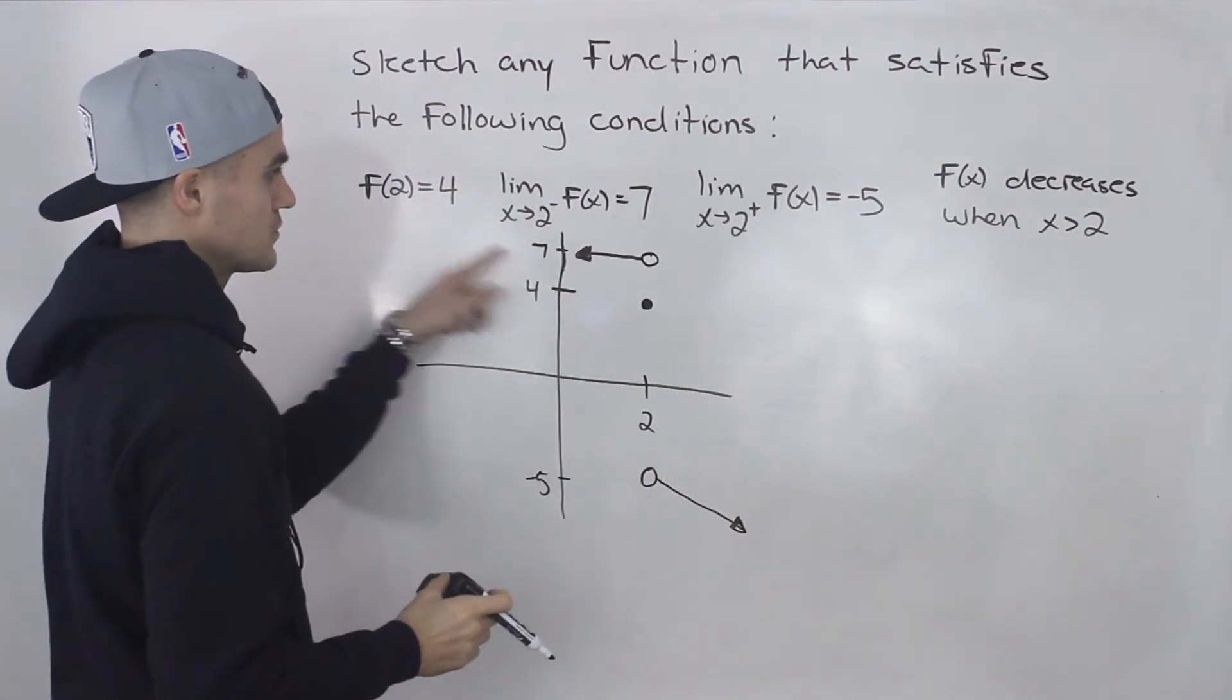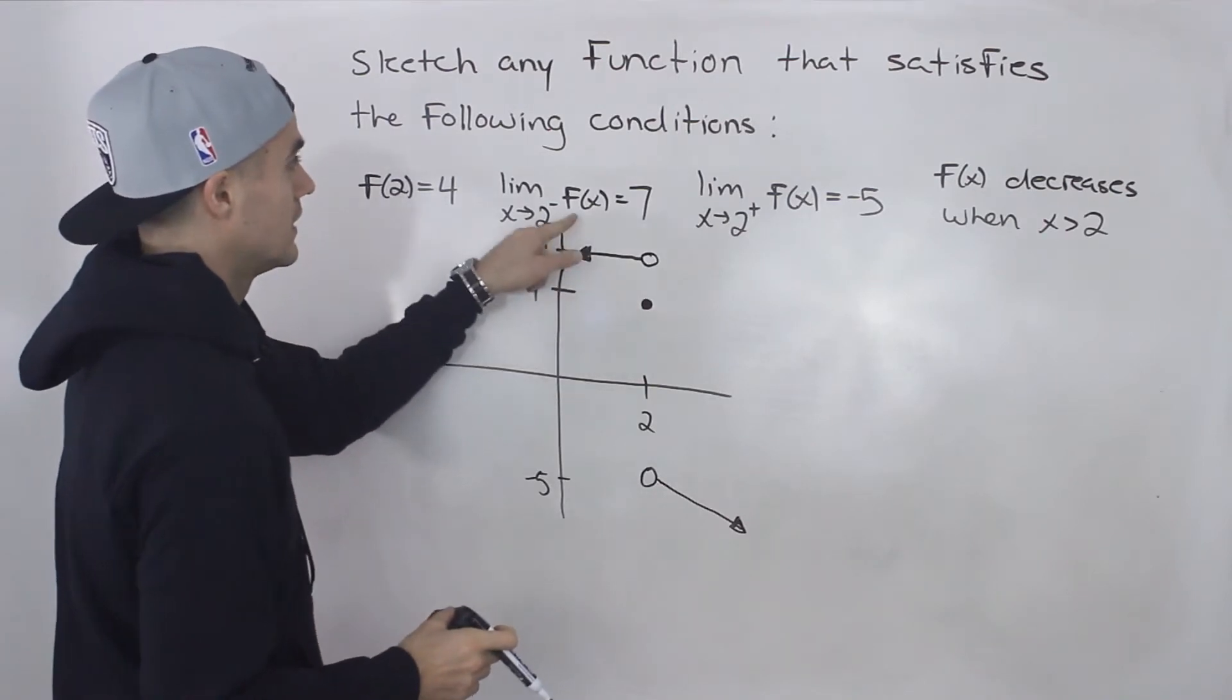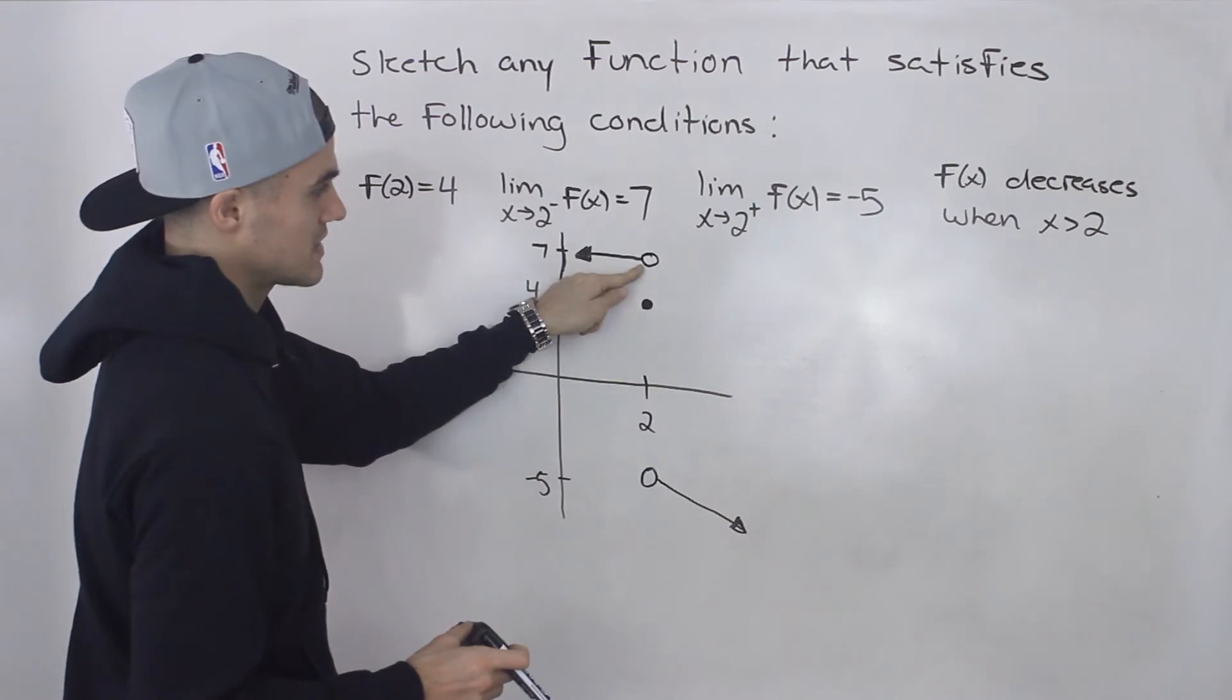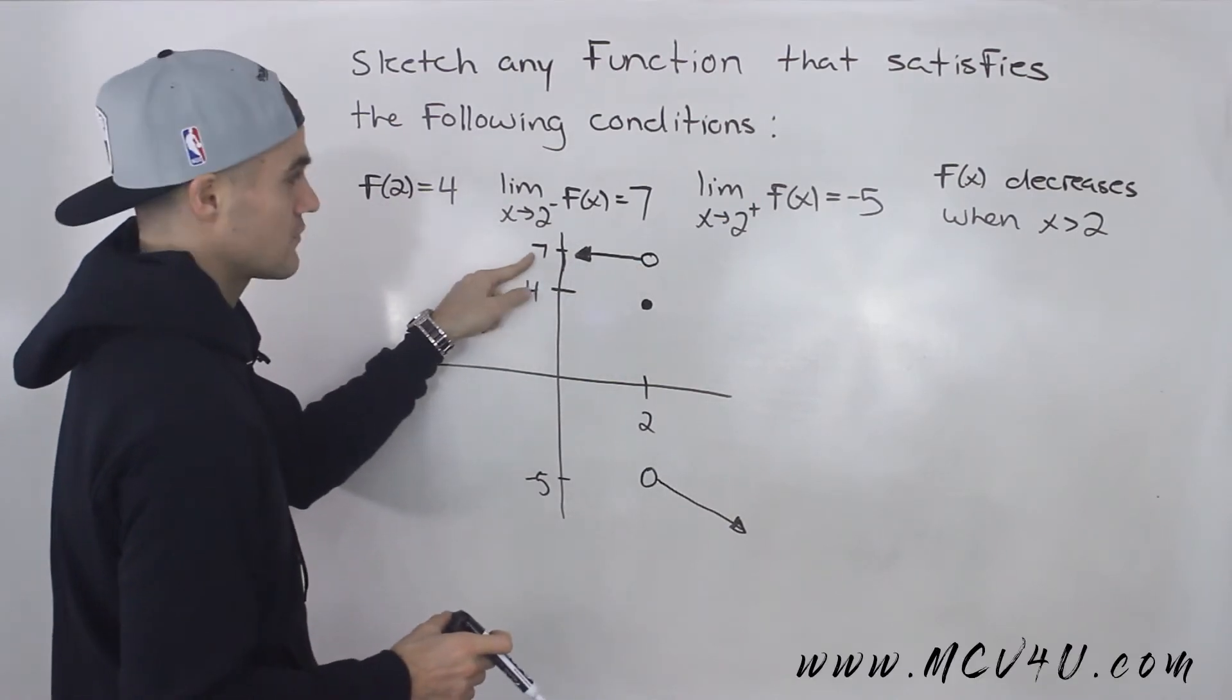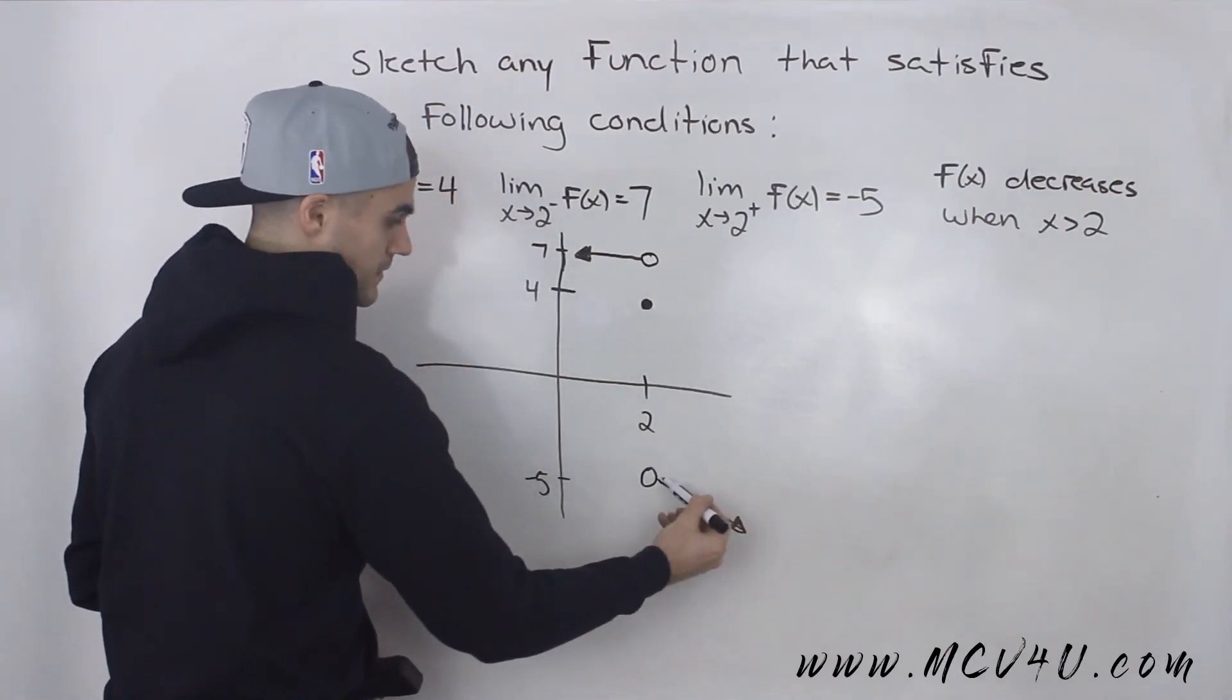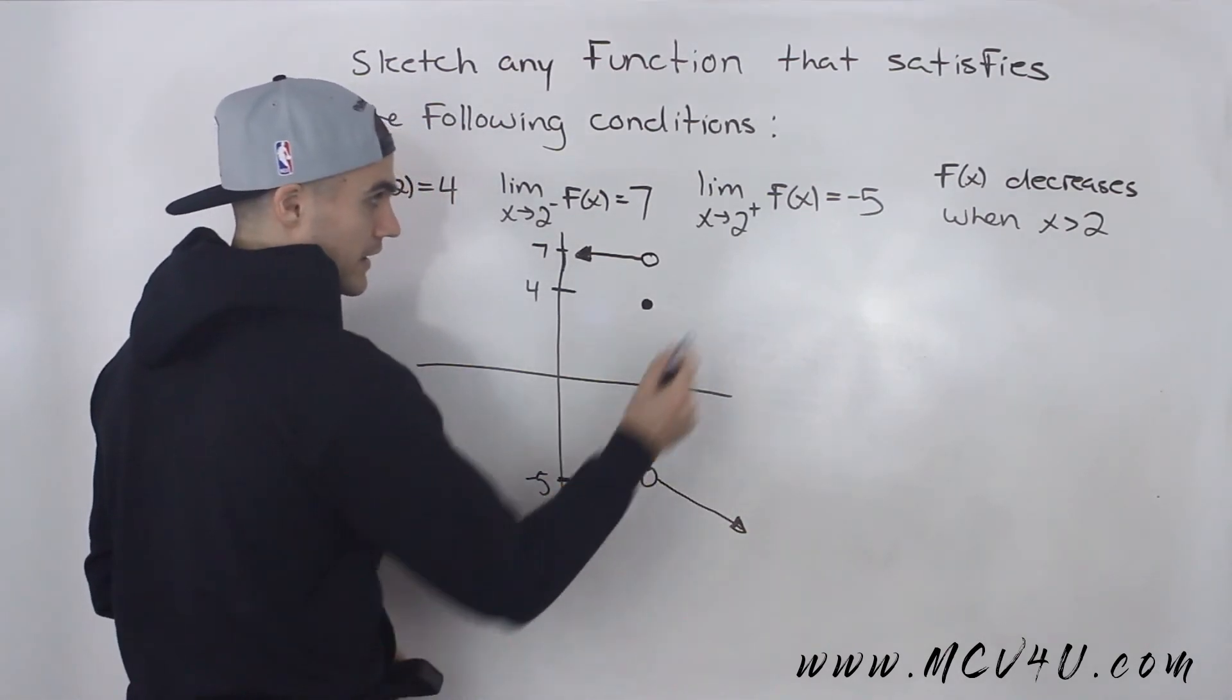So f(2) equals 4. Notice that's where the solid dot is. The limit as x approaches 2 from the negative side is equal to 7. We're approaching that y value of 7. Limit as x approaches 2 from the positive side is approaching this y value of negative 5.